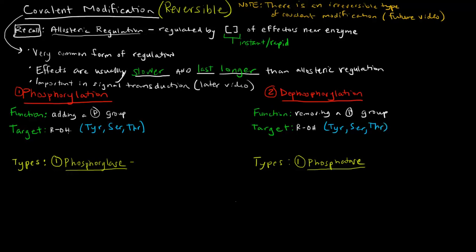So how would a hydroxyl group become a phosphate group? Instead of an R-OH, it would look like R-O-PO₃²⁻. You have a phosphorus and then three more oxygens, giving two negative charges. That's how a phosphate group would look, and this has to happen on an OH group, which could be on a tyrosine, a serine, or a threonine.